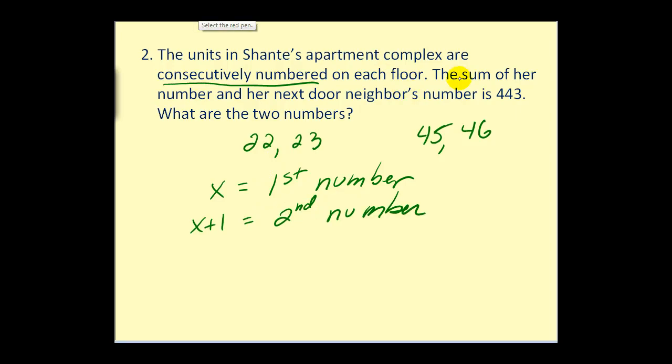Next, to form our equation, it says the sum of her number and the next number is 443. Well, sum means addition. So our equation is going to be the first number plus the second number must equal 443. So there's our equation to solve. Let's do the first step by combining our like terms. So our equation becomes 2x plus 1 equals 443. Let's take this over to the next screen.